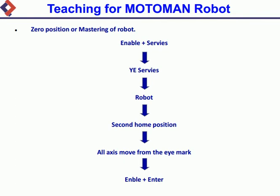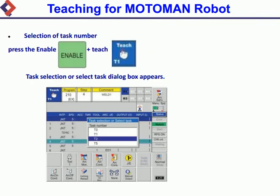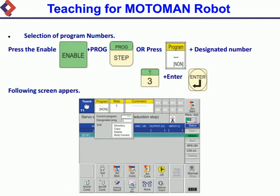Selection of task number: press Enable and Teach — task selection or select task dialog box appears. Selection of program numbers: press Enable and PROG, or press the designated number plus Enter. The following screen appears for program selection and new registration: Enable and Teach, select the task, enter the program number, new program.